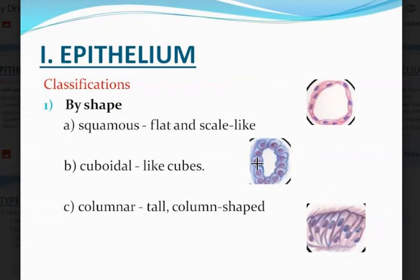And then you have the columnar epithelium. Columnar epithelium are tall column-shaped cells. The long axis of the nucleus is perpendicular to the base or the basal surface.